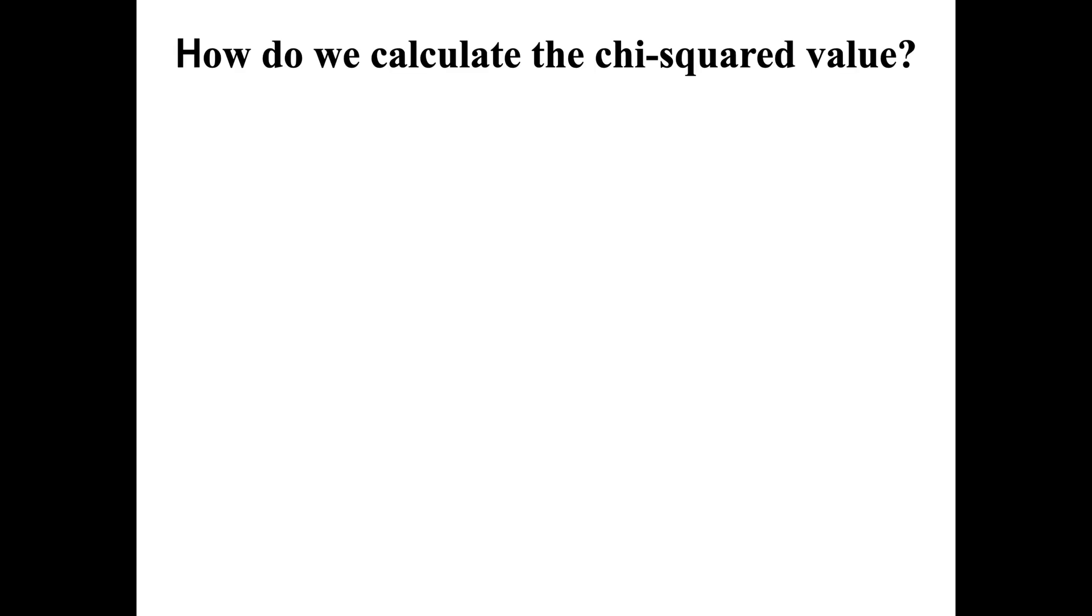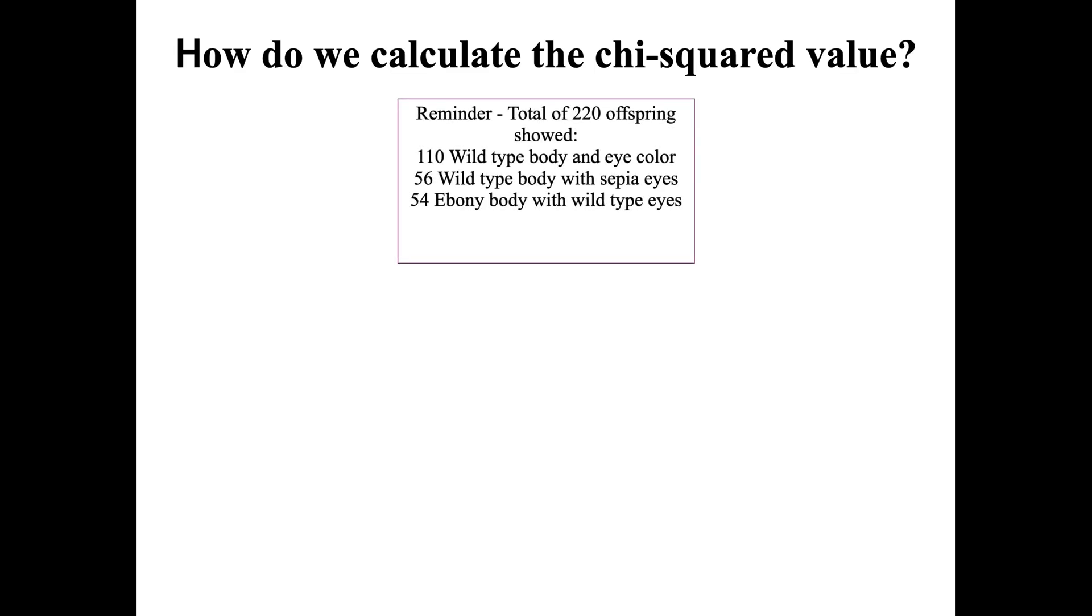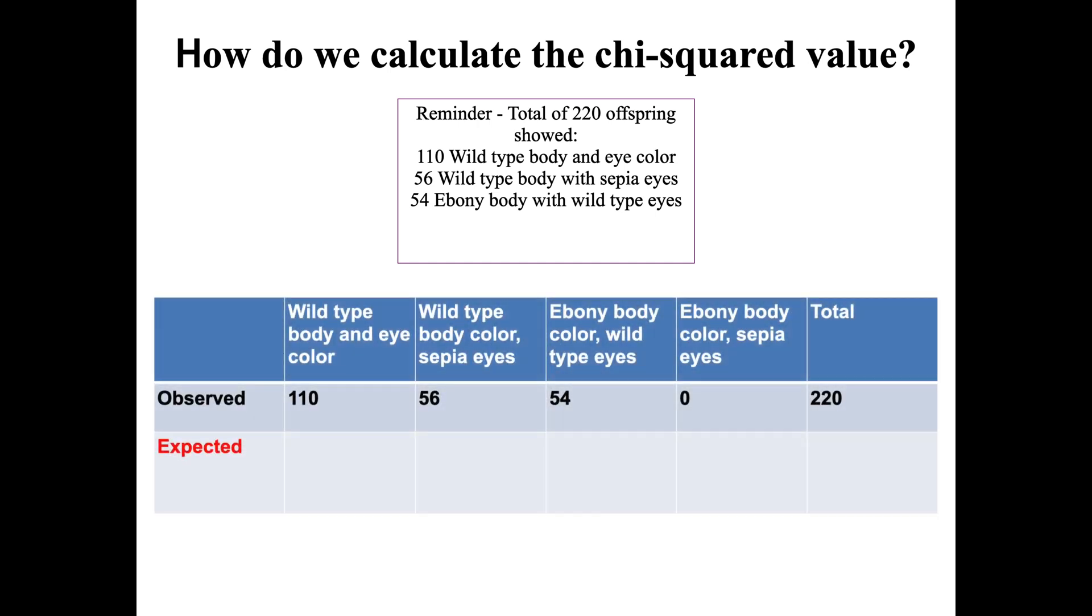Let's go through the solution to the practice question. From the practice question, the actual observed offspring were as follows. If we carry out a table just like we did before and input the data, the interesting thing is that we have zero that are actually giving out the ebony body color and the sepia eyes.